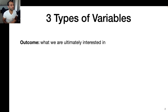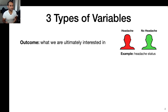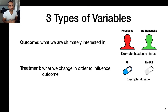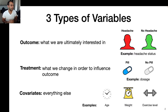Before diving into the discussion on causal effects, I'm going to touch on two pieces of background information. The first is the types of variables we see in estimating causal effects. The first type is the outcome variable — the variable we're ultimately interested in, such as headache status. Another type is treatment variables — the variables we change in order to influence the outcome, like the pill. And then we have everything else, which we call covariates, such as age, weight, exercise level, or how often someone takes headache pills.